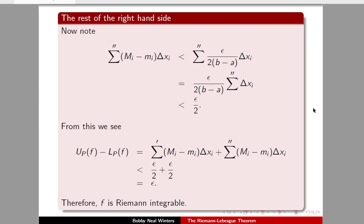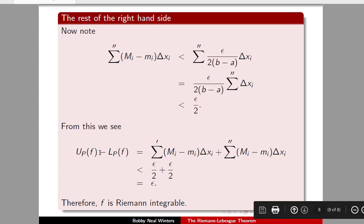Looking at the rest: when we sum over the remaining terms, we have a bound on big M sub i minus little m sub i of epsilon over two times (b minus a), because these are the intervals where our function is continuous or nearly continuous. We can factor that out of the sum, and as those intervals sum to a total length less than (b minus a), we reduce to epsilon over two. We can now see that the upper sum minus the lower sum will be within epsilon of each other, and therefore our function is Riemann-integrable.